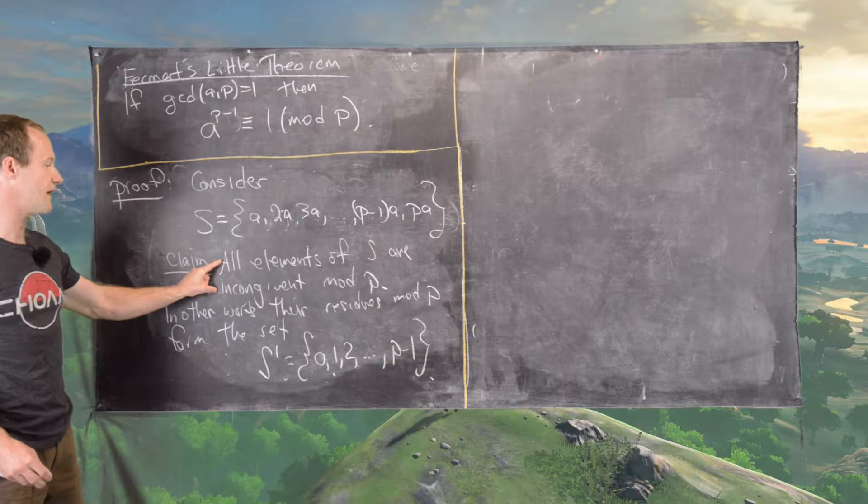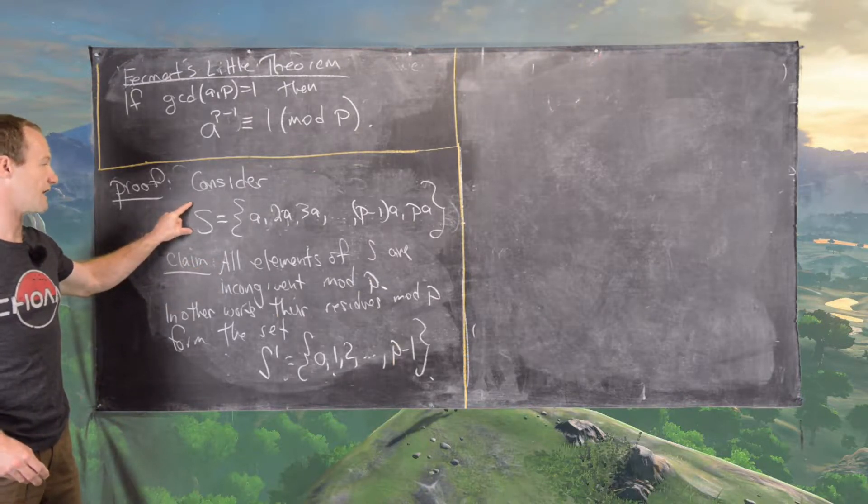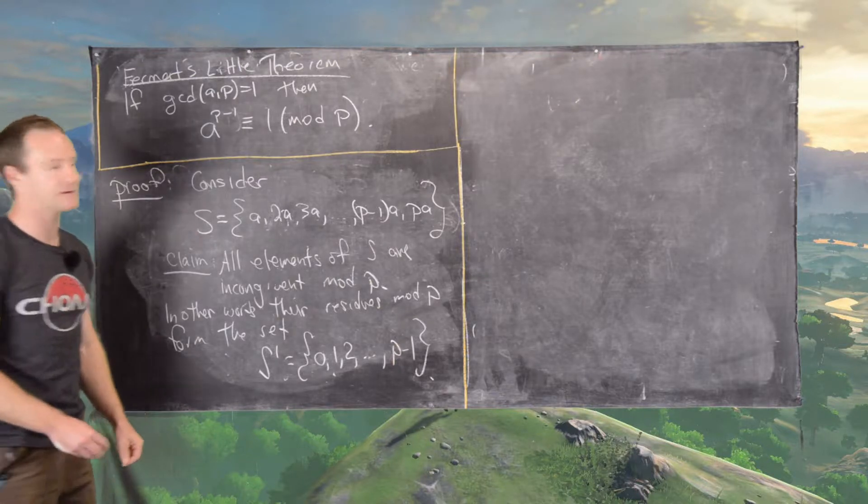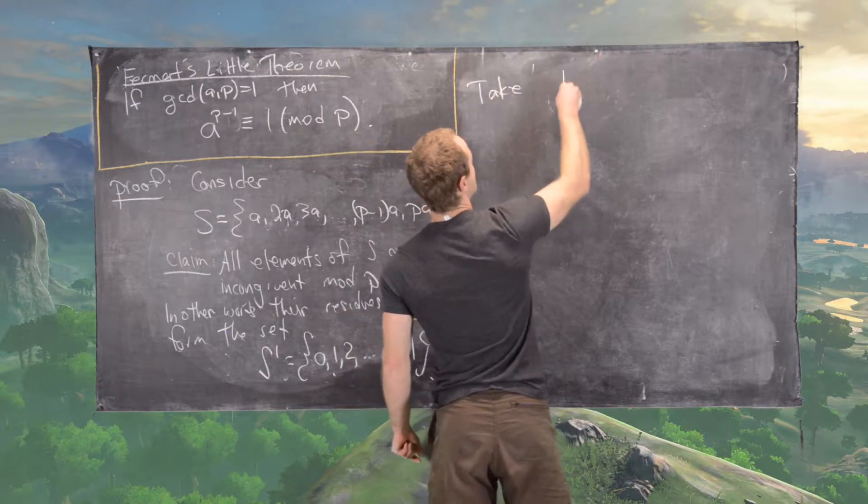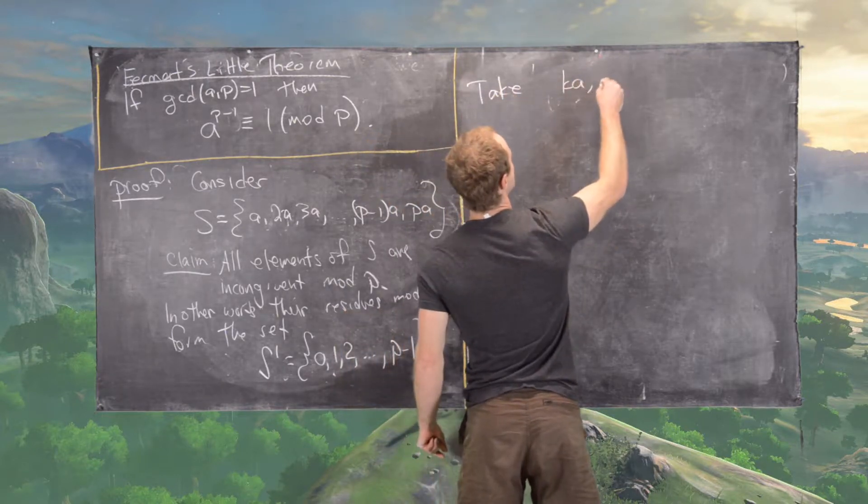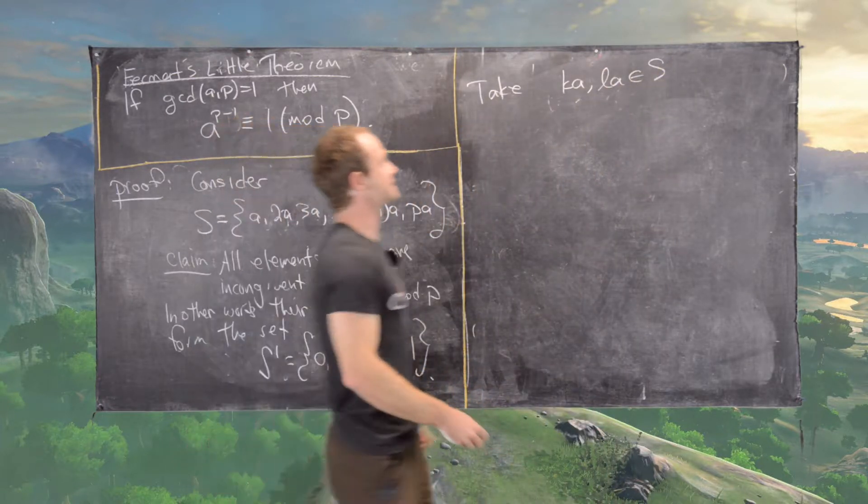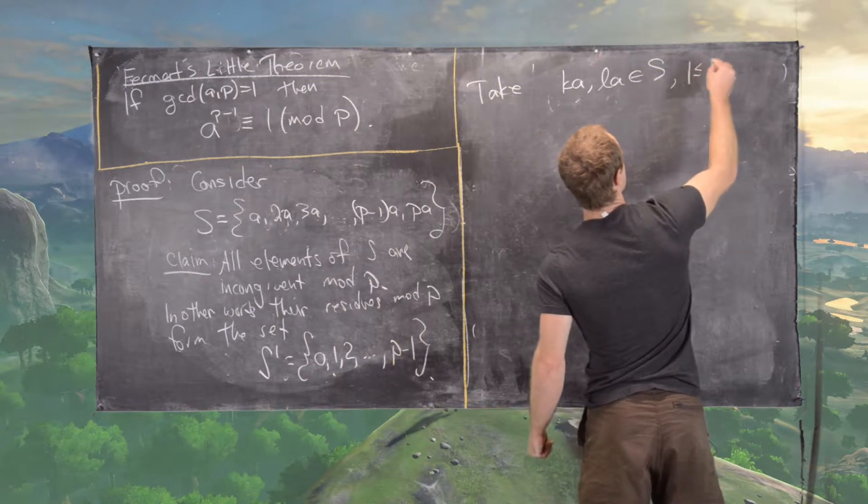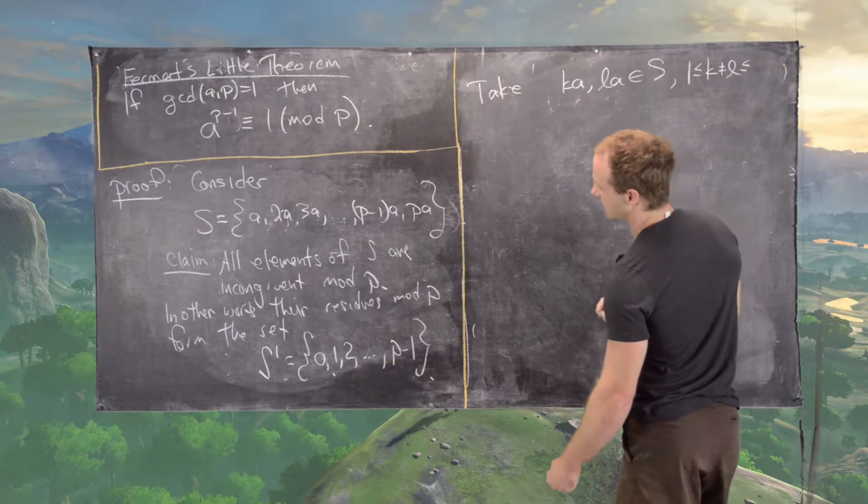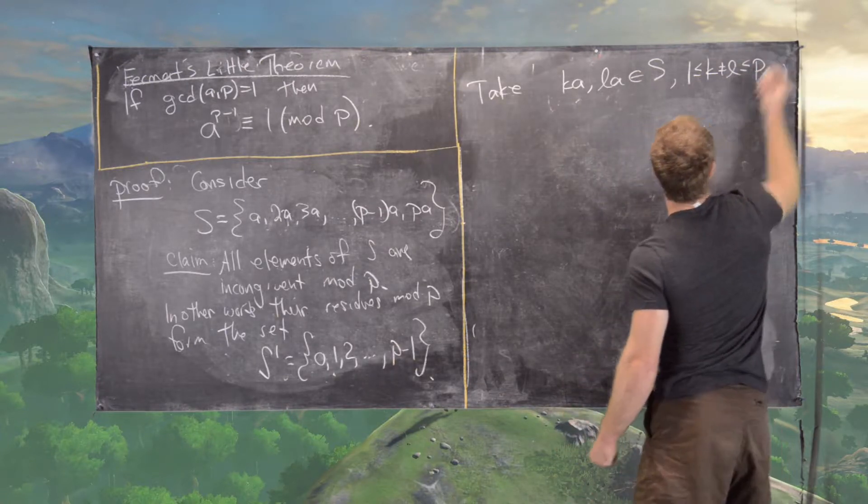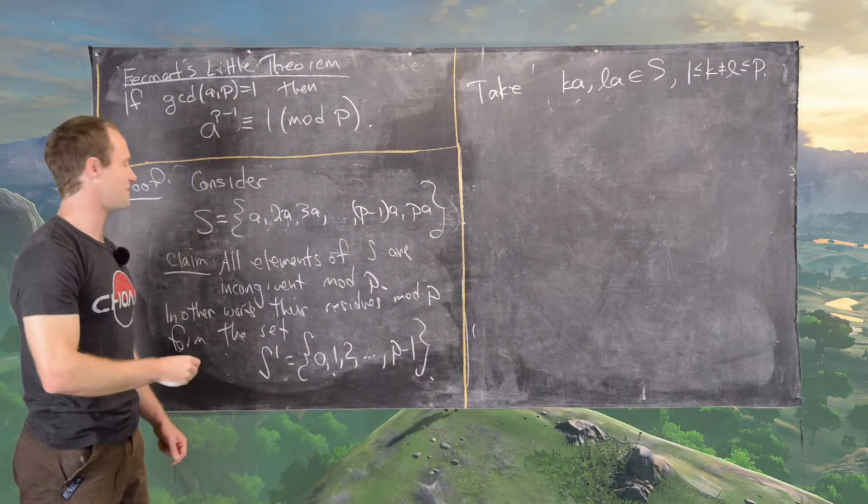So what we'll do is we'll take two elements of S, and then we'll show that they cannot be congruent modulo P. So let's take maybe K times A and L times A in S. And so now notice that tells us that 1 is less than or equal to K, which is not equal to L, and that's all less than or equal to P, because that's the form of the elements of S.